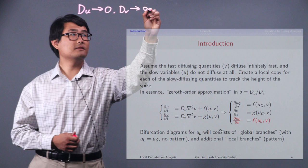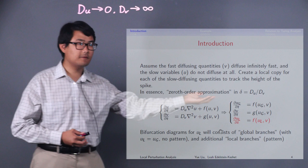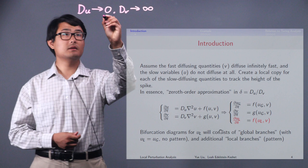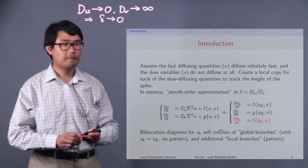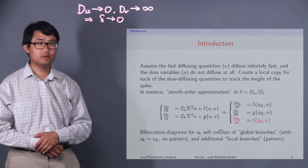Equivalently, since if we define delta as du over dv, we can say that we are letting delta go to zero. In essence, LPA is a zeroth order approximation in delta.